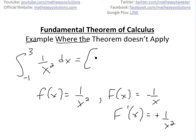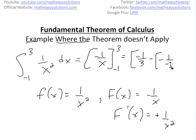Applying the theorem, you'll evaluate from negative one to three, and this equals negative one over three minus negative one over negative one. Then with a common denominator of three, that gives us negative one over three minus three over three, which equals negative four over three.